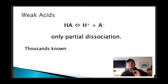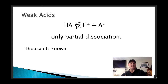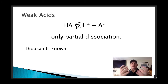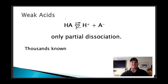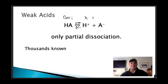Now here comes the fun part — weak acids. You'll notice we now have equilibrium happening. The reaction goes forward but also in reverse, meaning not all the hydrogens are donated into solution; some stay attached to the anion. There are literally thousands of different ions that act as weak acids. We're going to work with an equilibrium expression: Ka equals X squared over the initial concentration minus X.